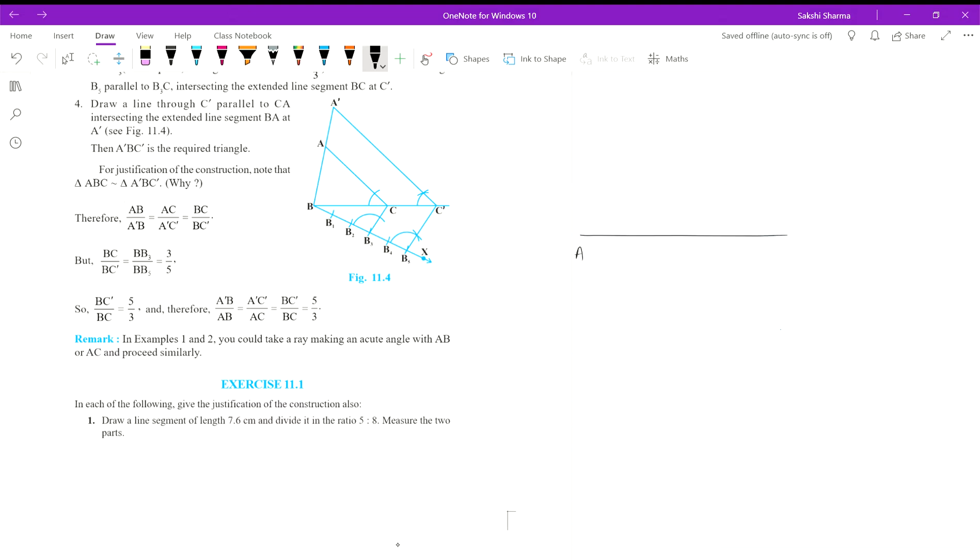So the first thing we did was start with the line segment of the given length AB, which was 7.6 centimeters, and afterwards we constructed an angle of 30 degrees at the endpoint A.